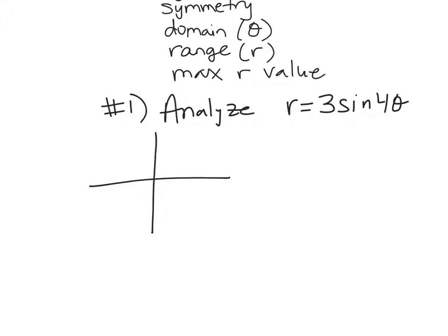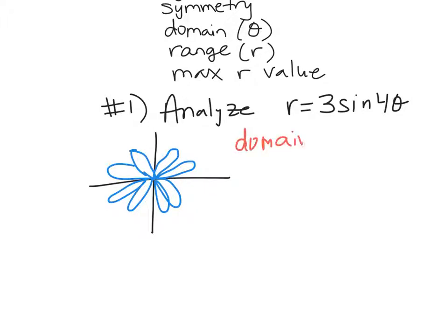Your sketch doesn't have to be perfect. It looks like there are two petals in each quadrant, so make sure you at least have that correct. The domain of this graph is going to be all the thetas. In this case, there's no restriction on theta — I can put in negatives and positives, and it can go around forever. So you can list that as negative infinity to infinity.